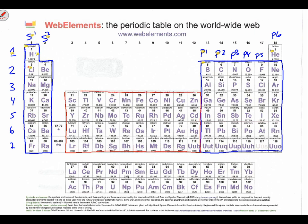We call this the D block — it's a subdivision. And we go from D1 all the way through D10: D2, D3, D4, D5, D6, D7, D8, D9, and D10. So far we've done three sub-levels: the S, the P, the D, and there's one more.